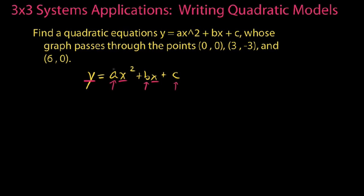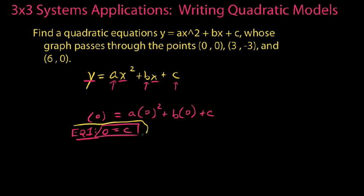Let's start with the point (0, 0). If we plug in 0 for y and 0 for x, we get 0 = a(0)² + b(0) + c, or simply c = 0. We'll call this equation 1 and keep it in our back pocket.